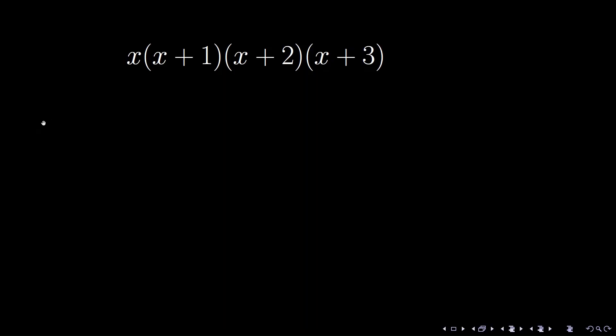The numerator of the left hand side has four factors: x, x plus 1, x plus 2, and x plus 3. They are separated into two groups. The first factor x and the last one x plus 3 in one group, and the second and third factors are in another group. You will see the reason right away.